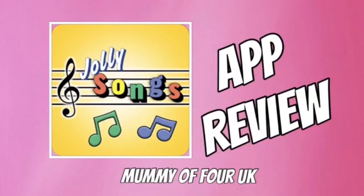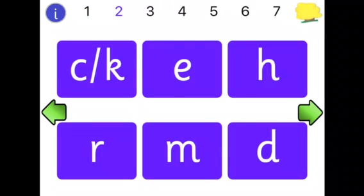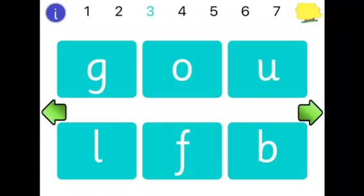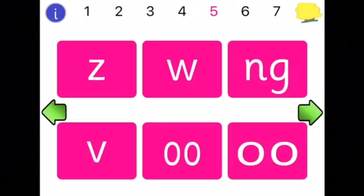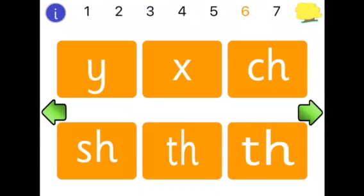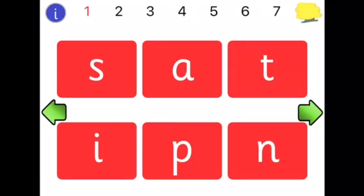Hi, Mummy of Four here. Today we are reviewing the Jolly Songs app from Jolly Phonics. As you can see when we open up the app, it breaks down the sounds into seven sound groups, and each of the sounds in each of the sound groups has a different song. It's got the seven sound groups and then the vowels separately in a separate section.